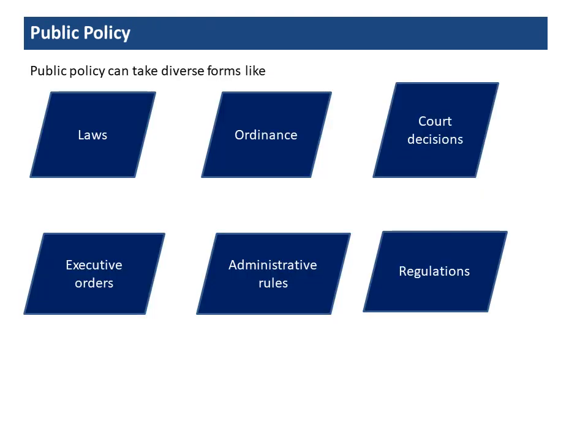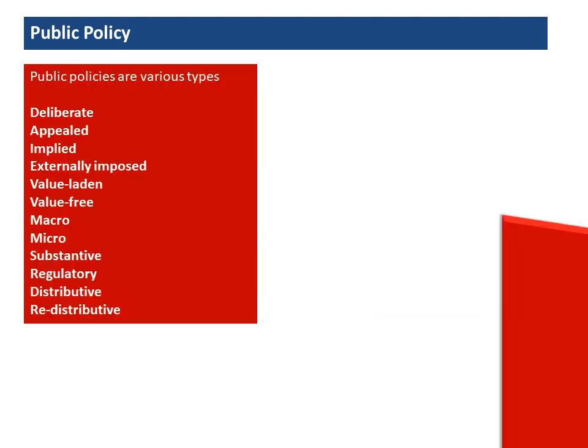Public policy can take diverse forms like laws, ordinances, court decisions, executive orders, administrative rules, and regulations. Public policies are of various types — they may be deliberate, appealed, implied, externally imposed, value-laden, value-free, macro, micro, substantive, regulatory, distributive, and redistributive.